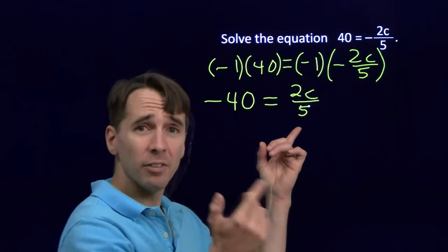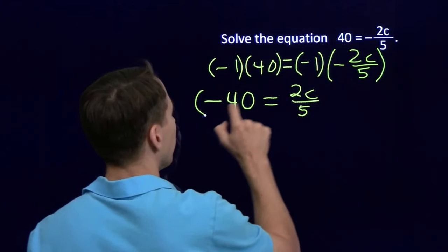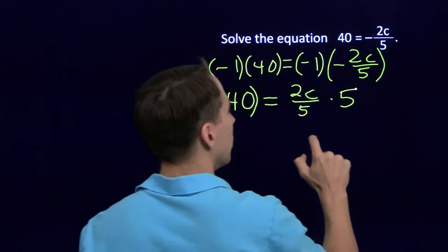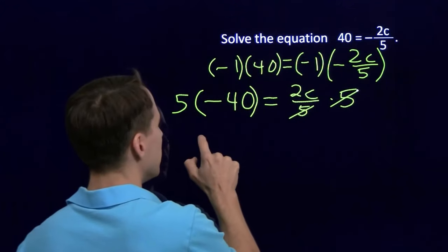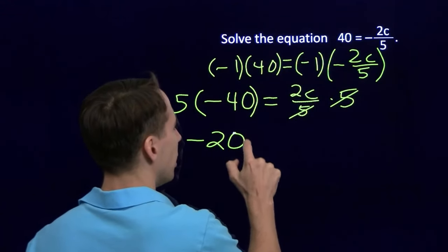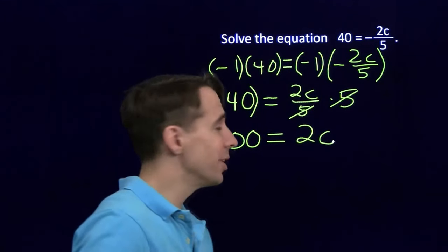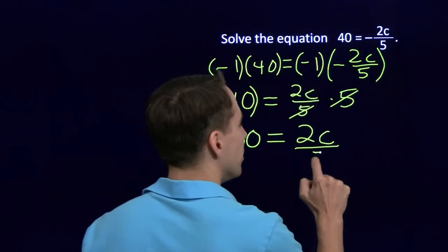Now, we can get rid of the 5 by multiplying both sides by 5. Of course, the 5's cancel over here. This gives me negative 200 over here on the left. Negative 200 equals 2c. And you can see where this is going now. We can divide off the 2.